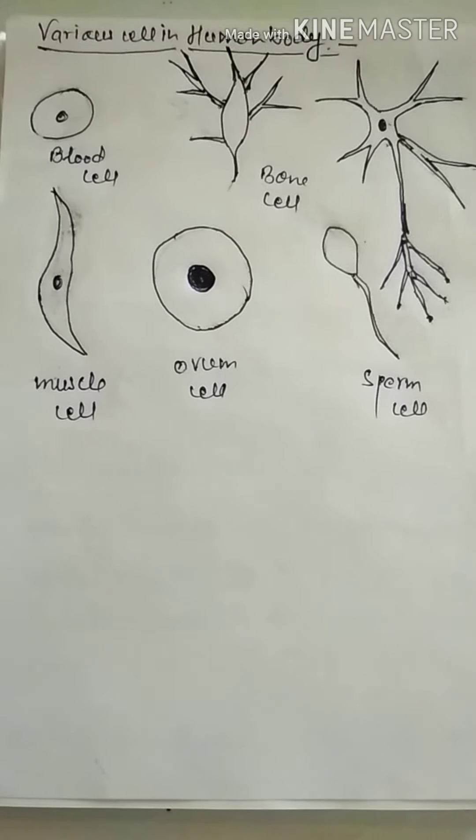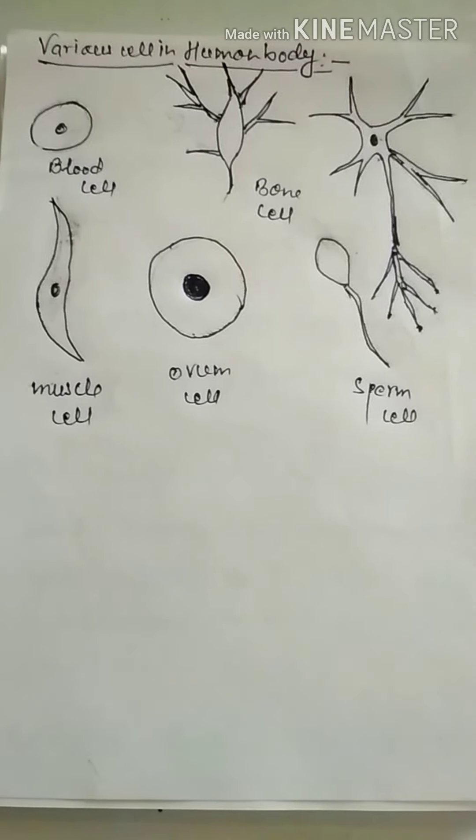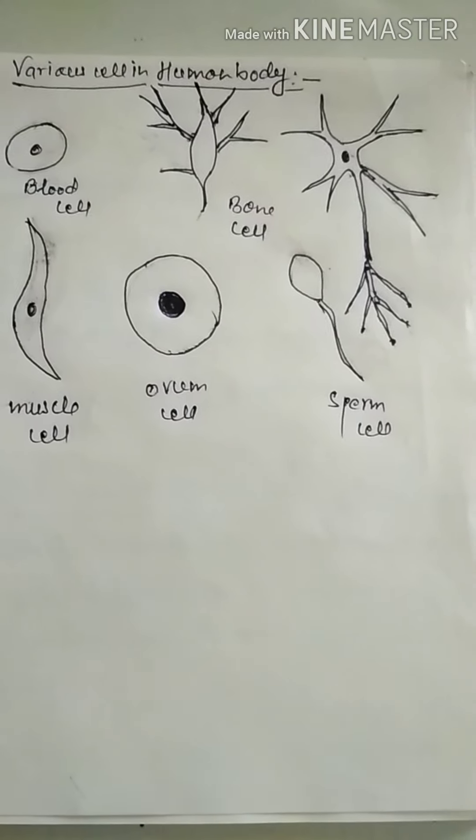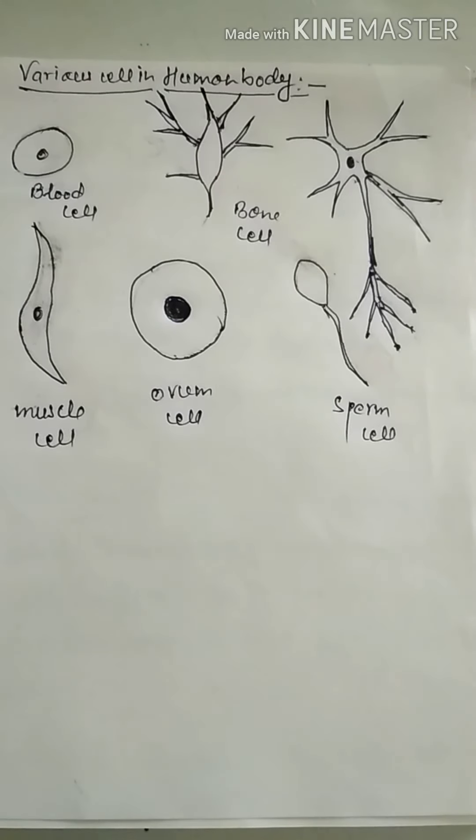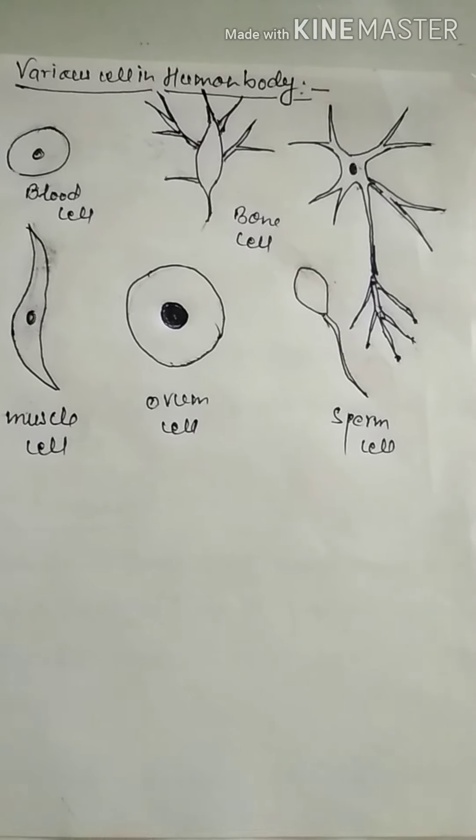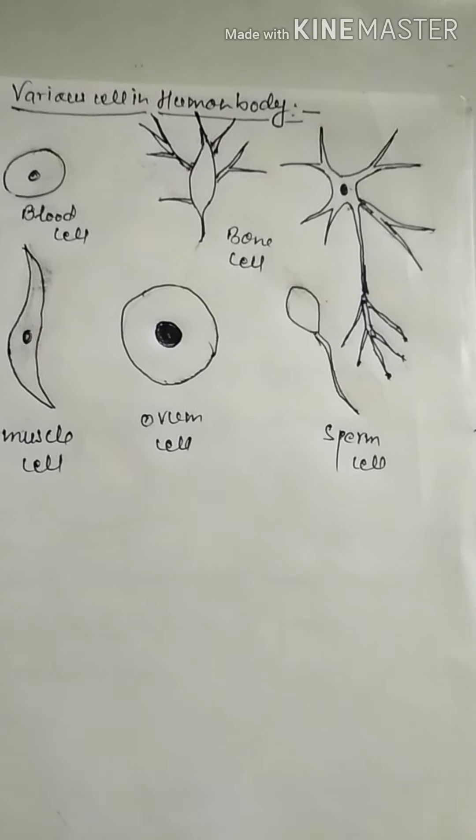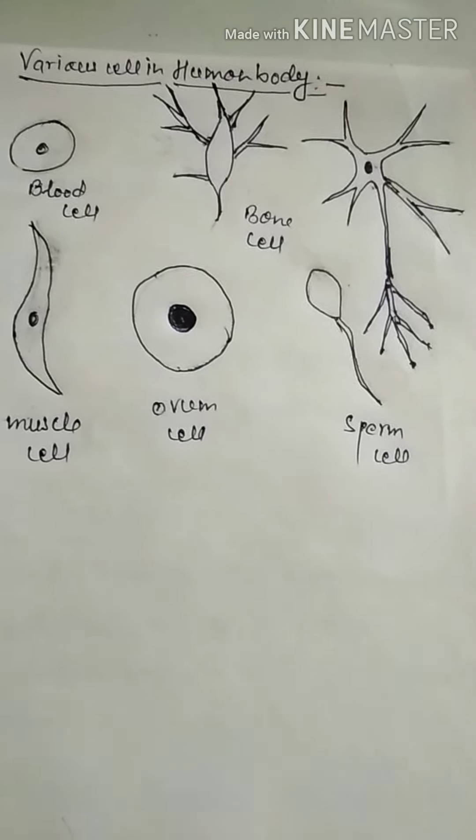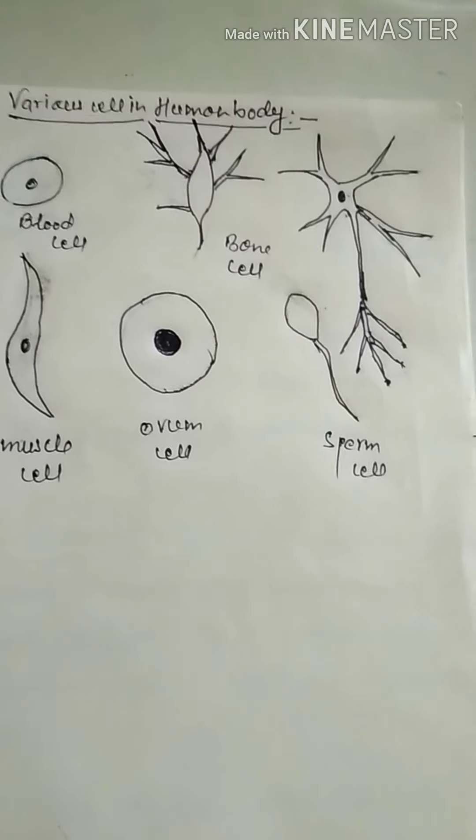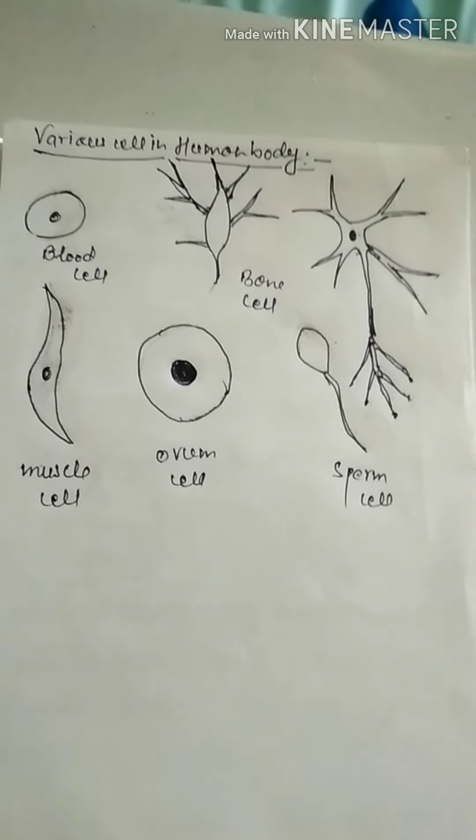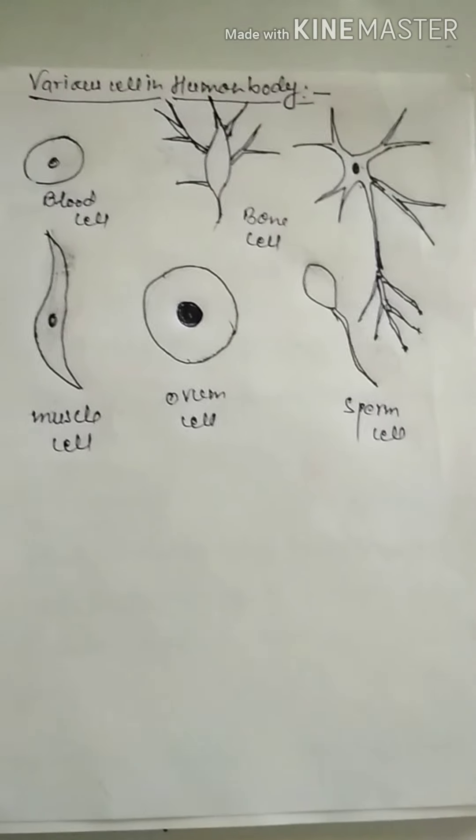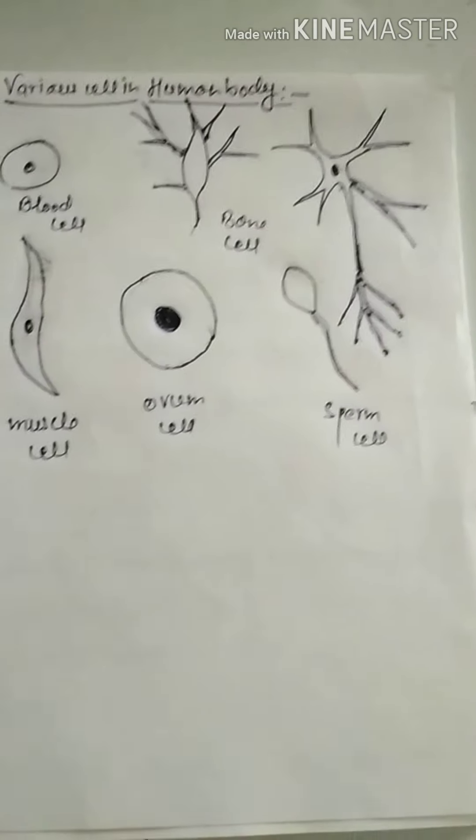We see various cells in human bodies or animals like blood cells, bone cells, nerve cells, sperm cells, ovum cells, and muscle cells. Muscle cells are those cells through which body movement takes place and nerve cells are those cells through which messages carry throughout the body.